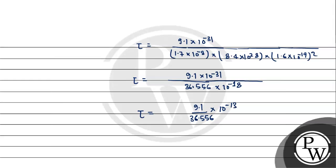So we divide: 9.1 divided by 36.556. This gives tau equals 2.48 × 10⁻¹⁴ seconds.